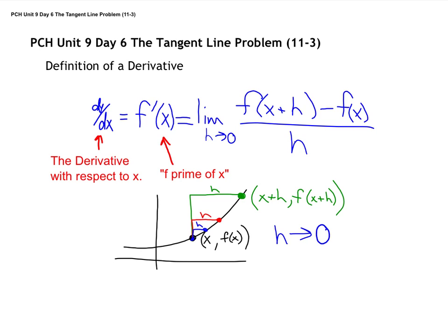All right, now the one nice thing about this is this gives us some good practice dealing with indeterminate forms. Because as you look at this, just by definition, this is an indeterminate form. As h approaches 0, I have f of x minus f of x on the top, which is 0. And if h is 0, then the bottom is 0 as well. So this is an indeterminate form.